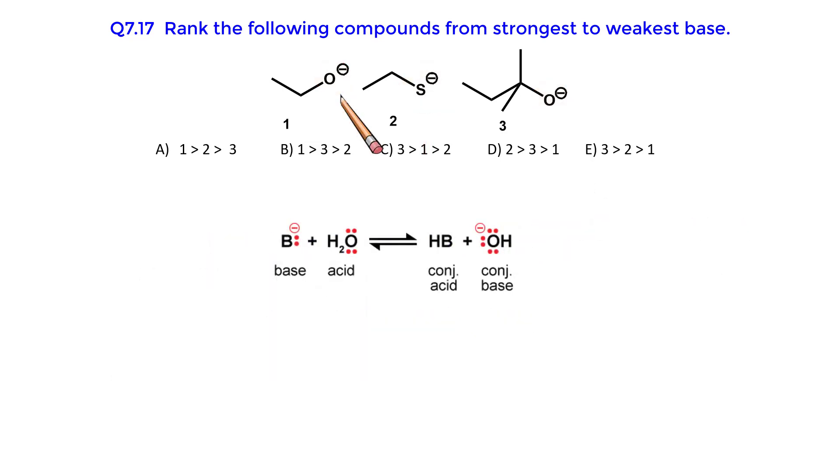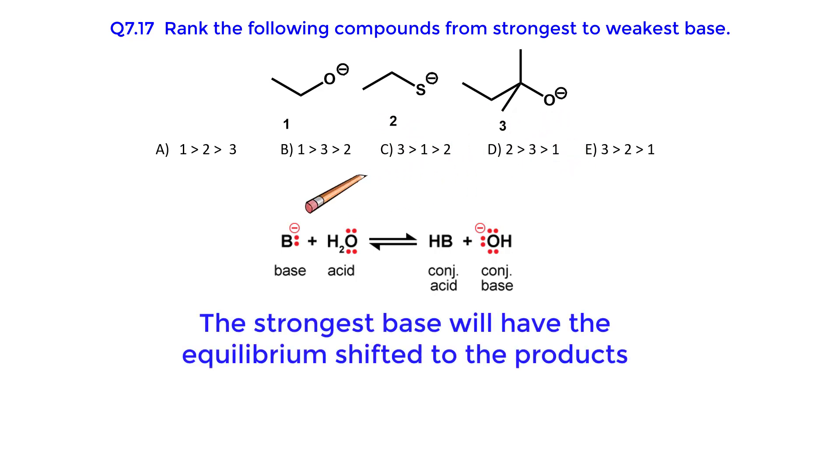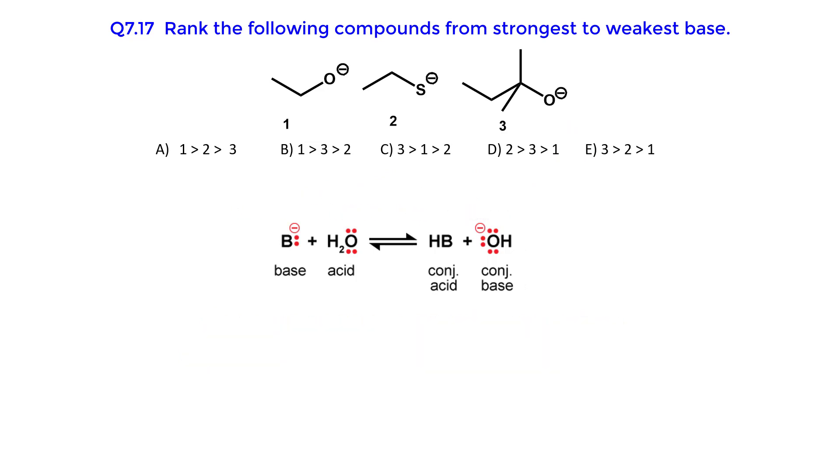Now look at the oxygen containing compounds. Both alkoxides are strong bases. However, the strongest base will have the equilibrium shifted more to the products. Which equilibrium is shifted more to the products?